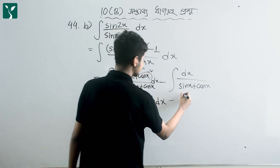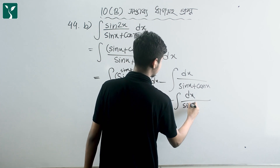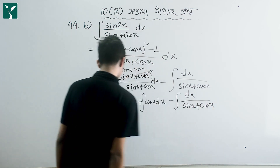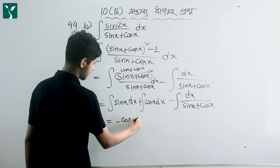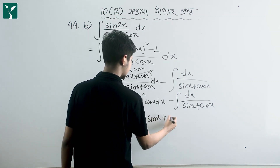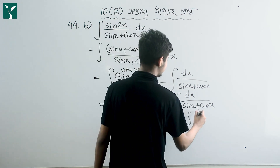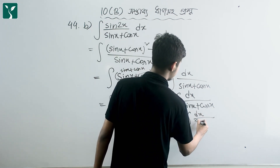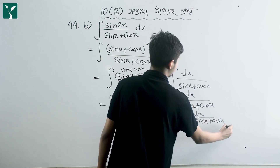We will do each integration separately. For the first part, integrating sin x plus cos x: sin x integrates to minus cos x, and cos x integrates to sin x, giving us minus cos x plus sin x plus c1, minus the integration of dx by sin x plus cos x.